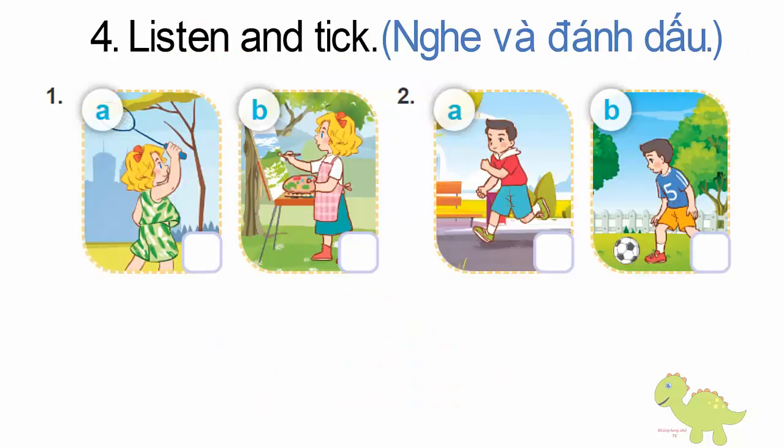Page 59, Lesson 1, Activity 4. Listen and tick. 1. Is that Mary? Yes, it is. Look, she's playing badminton. Yes, she is.